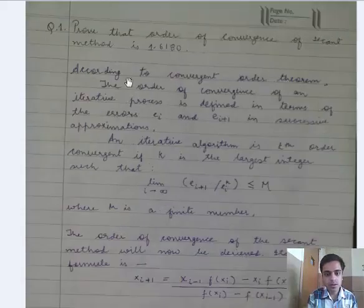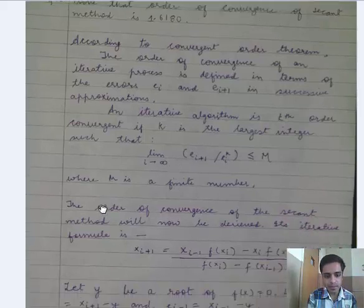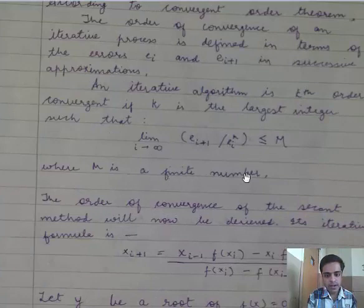According to convergent order theorem, the order of convergence of an iterative process is defined in terms of the errors ei and ei+1 in successive approximations. An iterative algorithm is kth order convergent if k is the largest integer such that limit i tends to infinity of ei+1 divided by ei to the power k is less than or equal to m, where m is a finite number.